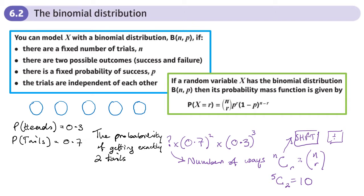So I calculate: 10 × 0.7² × 0.3³, and I get 0.1323. That means there's about a 13.23% probability of flipping five coins and getting exactly two tails.